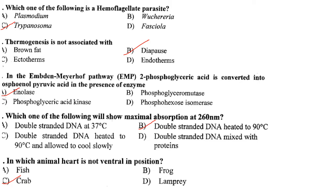Which one of the following will show maximal absorption at 260 nanometers? Double-stranded DNA heated to 90 degrees Celsius will show maximal absorption at 260 nanometers, because the double-stranded DNA unwinds to form single-stranded DNA and the bases become unstacked, allowing them to absorb more light.